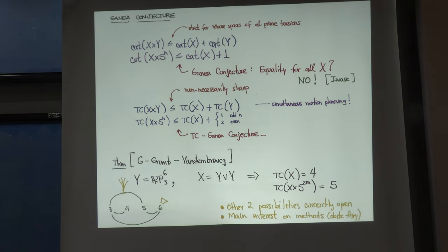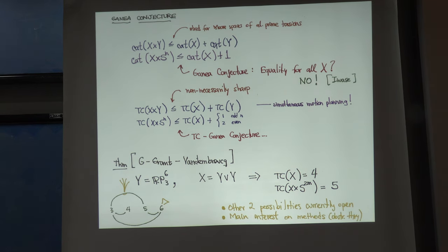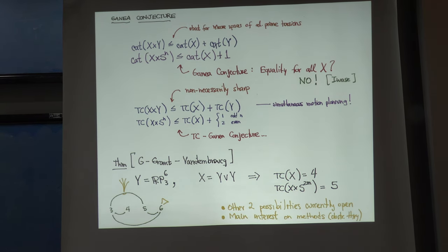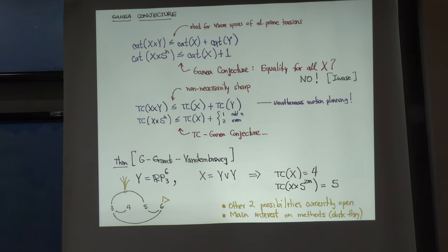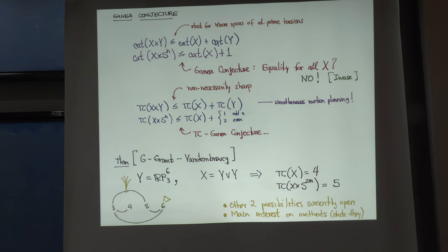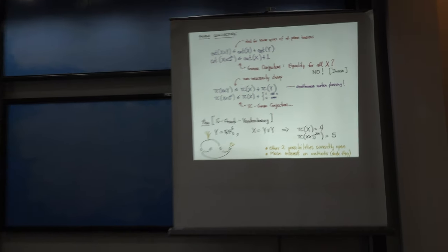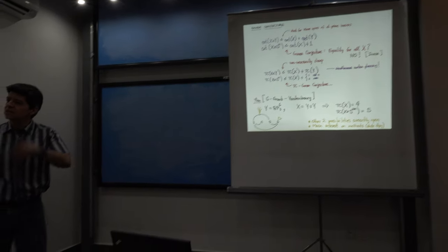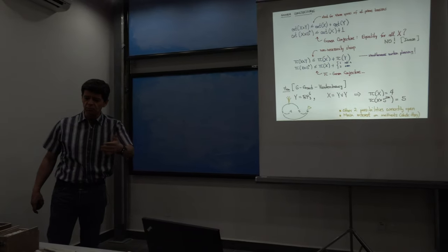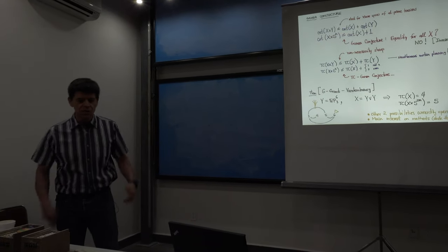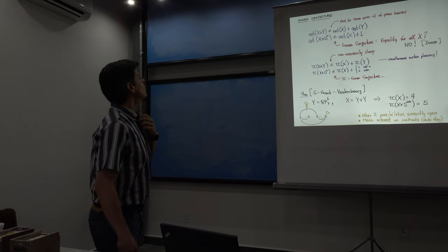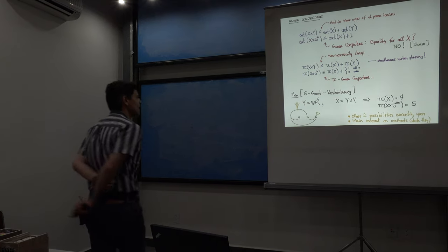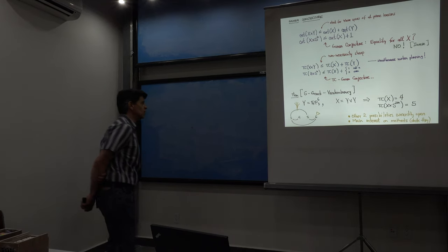Iguasi's examples are somehow easy to understand — these are two-cell complexes, although the attaching maps are a bit mysterious because you have to dig fairly deep into the homotopy groups of spheres to find these examples. But that's the answer.